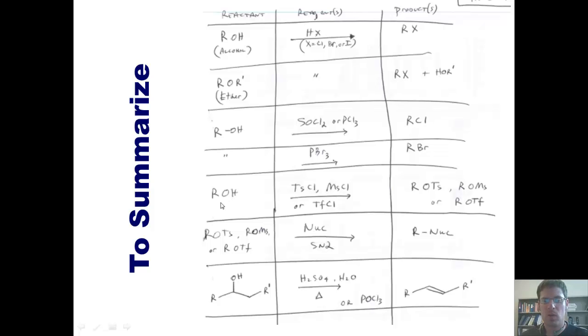Thus, in a two-step sequence, I can take an ROH and convert it into one of these, which are called sulfonate esters, and take the sulfonate esters and treat it with any nucleophile and get an SN2 reaction where the nucleophile has replaced the sulfonate ester group.